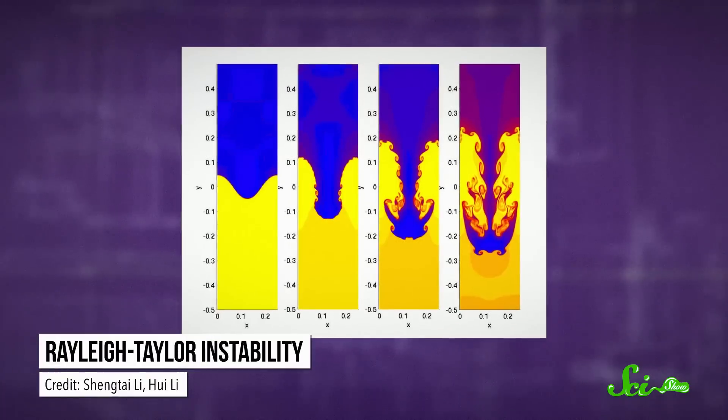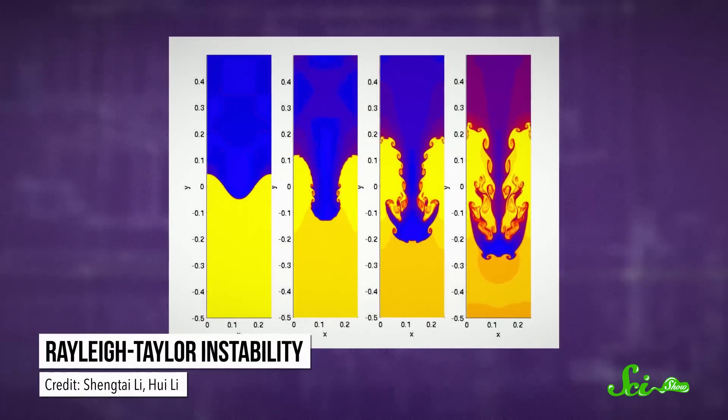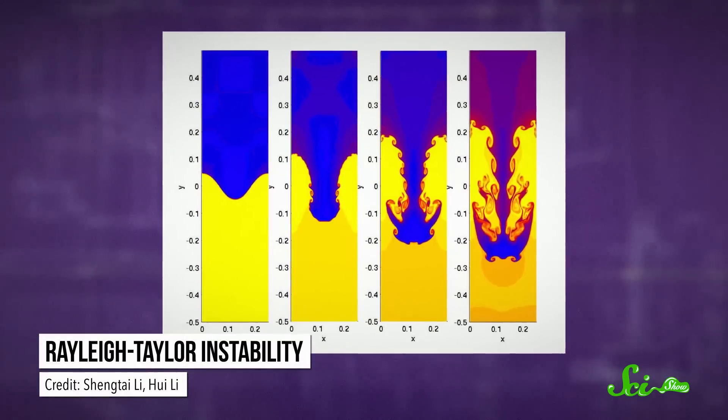It's called the Rayleigh-Taylor instability. Mushroom shapes tend to form whenever two layers of different densities interact, like the hot air from an explosion and the cooler air in the atmosphere.